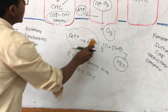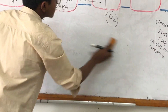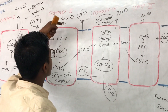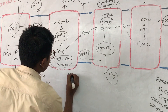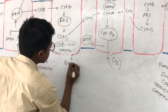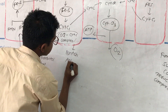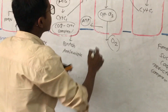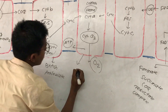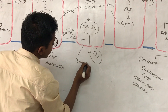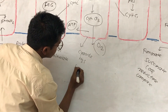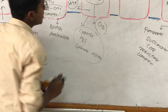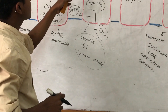The inhibitor that inhibits complex 3 is British anti-lewisite (BAL). The inhibitor of complex 4 — the most commonly asked in exams — is cyanide and sodium azide. Whenever inhibitors are present, there is no transfer of electrons and no electron transport chain activity.